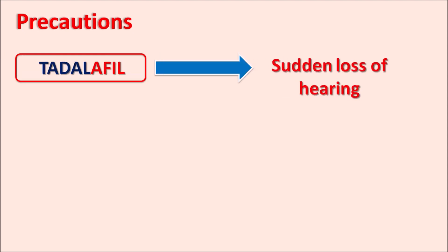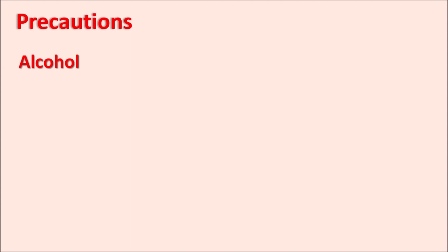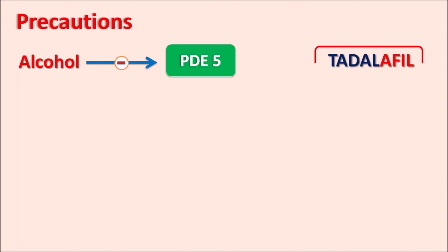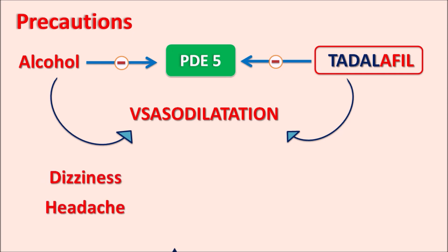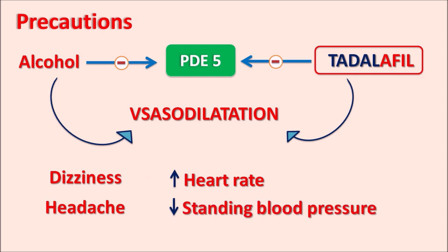Similarly, Tadalafil can also produce sudden loss of hearing. This drug can produce dizziness, lightheadedness, and tinnitus — a buzzing noise in the ears — and suddenly it can lead to loss of hearing. Care should be taken with patients who are already having some loss of hearing. Another important precaution is the use of alcohol along with Tadalafil. Alcohol can also inhibit the activity of phosphodiesterase type 5 enzyme, and similarly Tadalafil also inhibits this enzyme, so both can produce vasodilation. When alcohol is given along with Tadalafil, it can produce severe vasodilation symptoms such as dizziness, headache, increased heart rate, and decreased standing blood pressure. A large amount of alcohol should be avoided with Tadalafil.